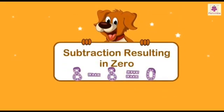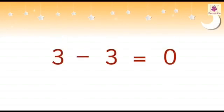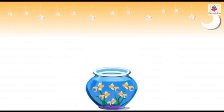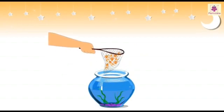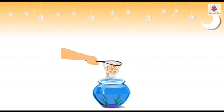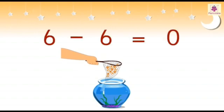Subtraction resulting in 0: when we subtract a number from the same number, the result is 0. For example, if we take out all 6 fish from a fish bowl, the number of remaining fish will be 6 minus 6 is equal to 0.